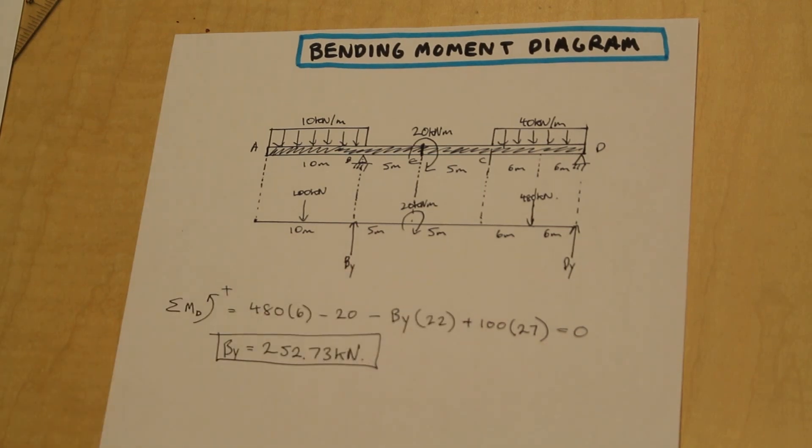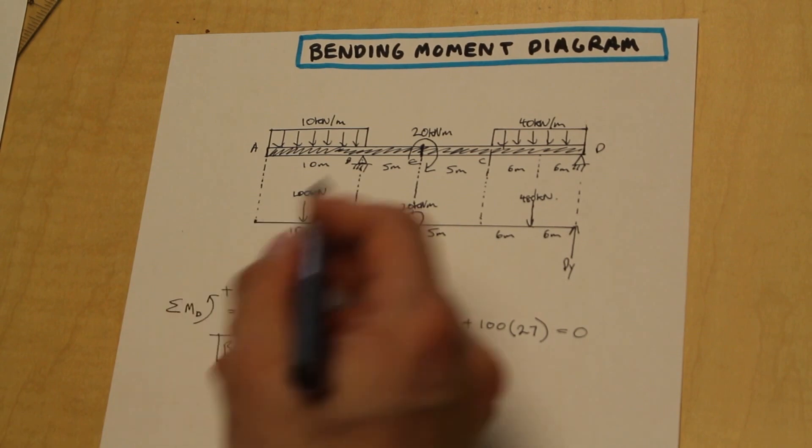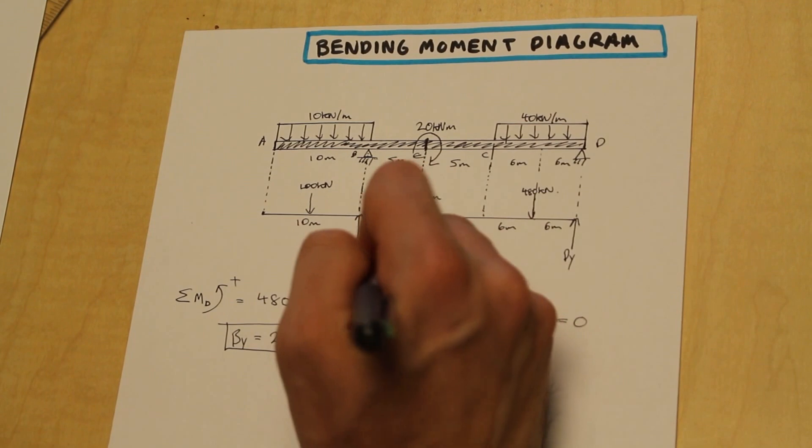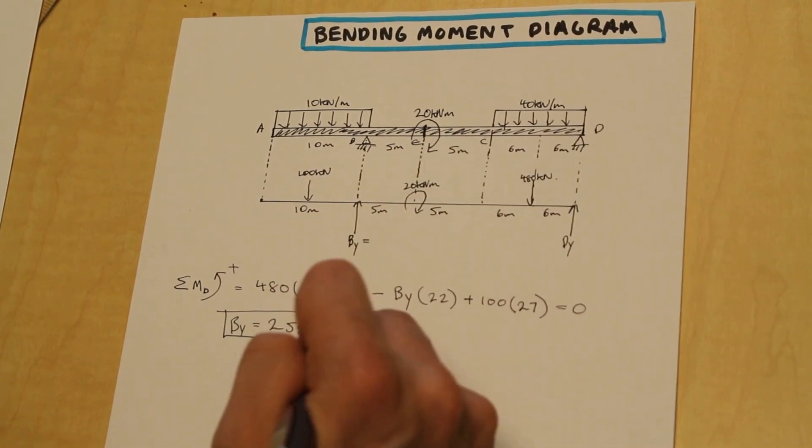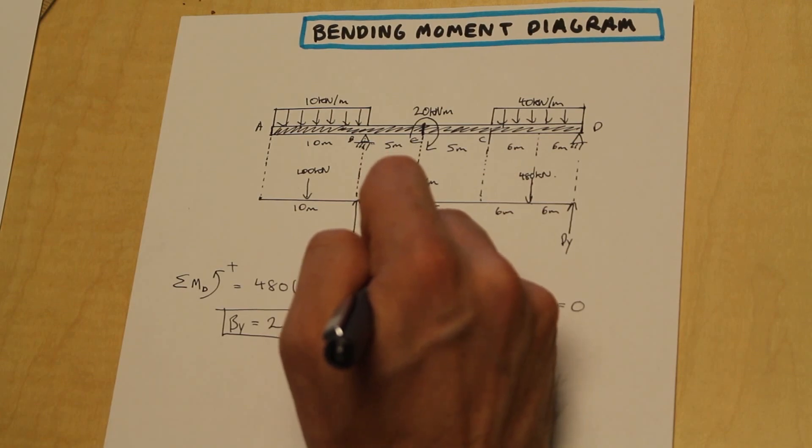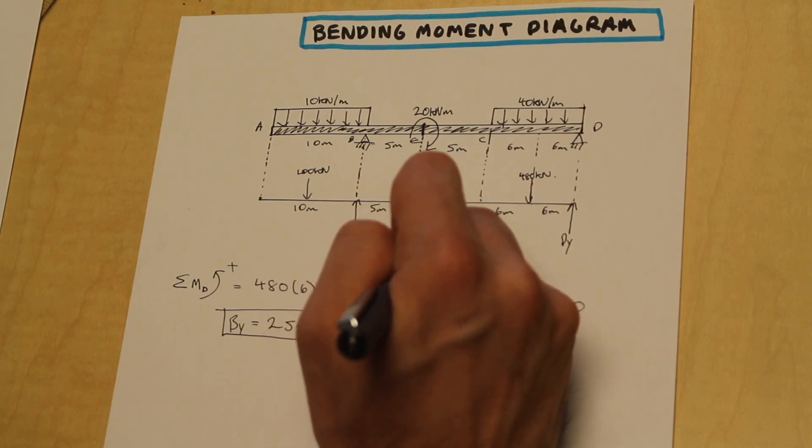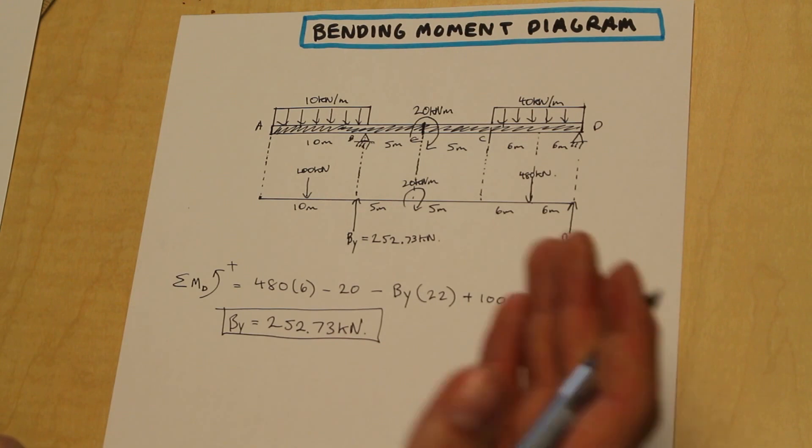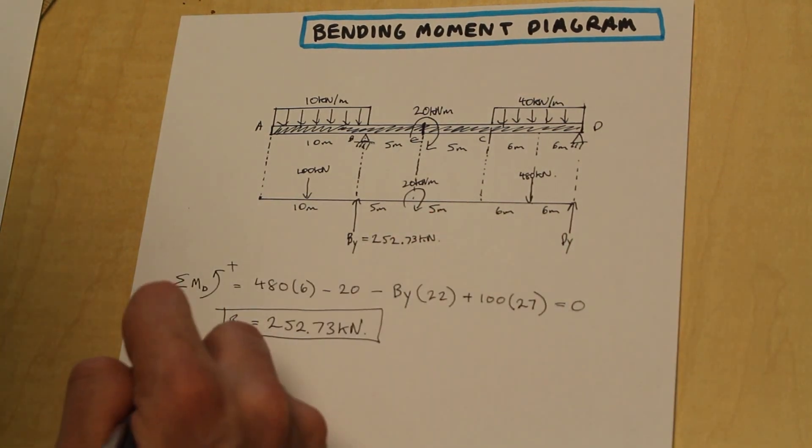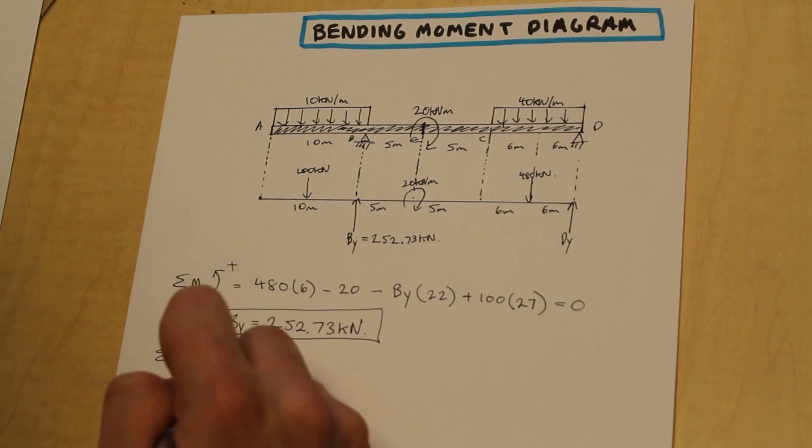All right, so that's what we get. Now, all we need to do next is solve for the moment at B. I do like to, when I get this number here, put it straight into my free body diagram. That way, I'm not looking around and I'm not confused as to what exactly is going on. Let's take the moment about B.